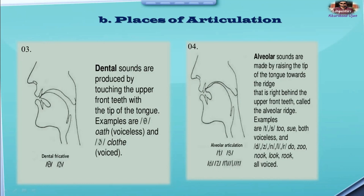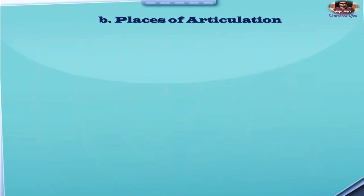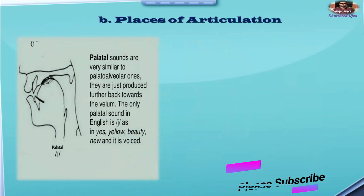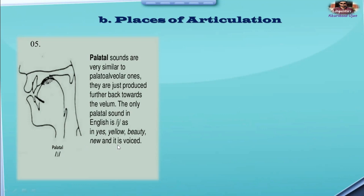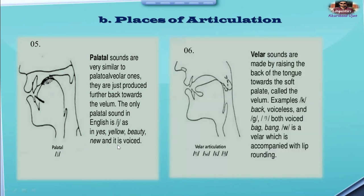Number five: palatal sounds. Palatal sounds are produced further back towards the velum. The only palatal sound in English is /j/, as in 'yellow' or 'beauty,' and it is voiced. If you look at this picture, in palatal sounds we are touching the central part of the tongue to the hard palate, and this /j/ sound is known as a palatal sound.